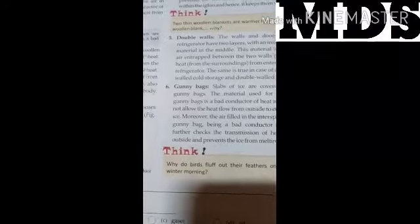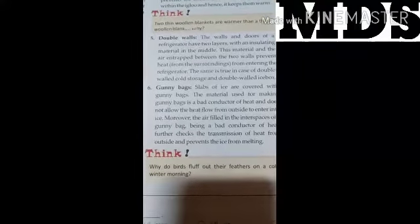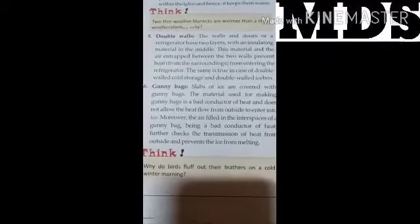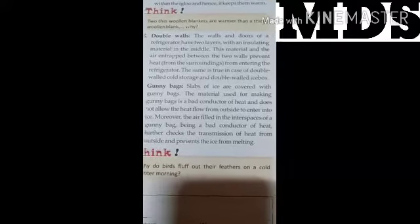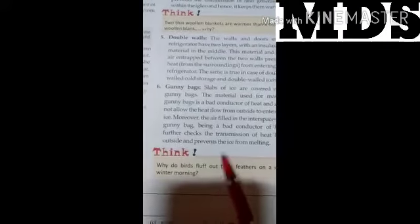The double wall of a refrigerator door has two layers of insulating material in the middle, which prevents the passing of heat. Gunny bags: slabs of ice are covered with gunny bags, and the material used to make gunny bags is a bad conductor of heat that does not allow heat from outside to enter and melt the ice. These are different uses of bad conductors of heat.